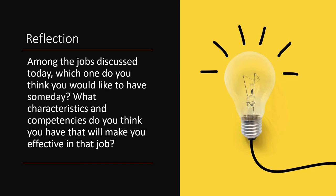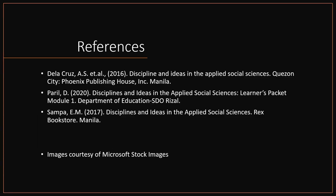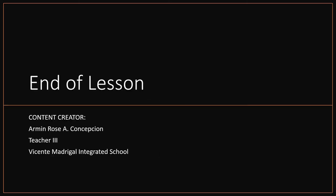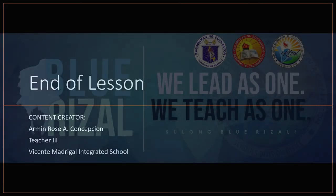I hope you have gained a clearer understanding of applied social sciences. Now it's time for you to make a reflection. Among the jobs discussed today, which one do you think you would like to have someday? What characteristics and competencies do you think you have that will make you effective in that job? Think about that and write it down. As we go through the lessons, go back to your list and see if they align with your preferred discipline. The ideas discussed in this lesson are based on the content standards of the Department of Education. Once again, I am your teacher for today, Armin Rose Concepcion. Thank you for watching and see you in the next lesson.